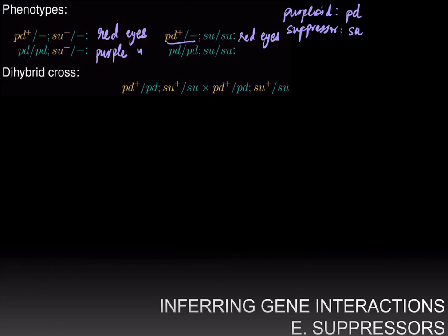Finally, when you look at the double mutant — homozygous for the mutant allele of both purploid and the suppressor — what the suppressor does is suppress the mutant phenotype of purploid and revert the phenotype back to wild type, so you get red eyes.